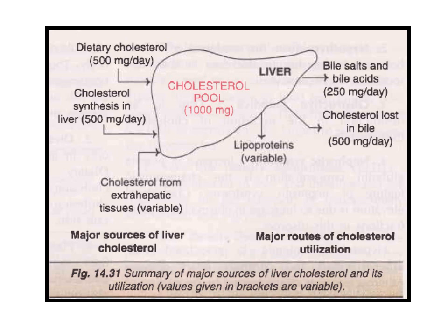These are the summary of the major sources of liver cholesterol and its utilization. Cholesterol is synthesized in the liver and also formed from extra-hepatic tissues, as already discussed. The major routes of utilization include cholesterol in the form of lipoproteins, bile salts, and bile acids. Cholesterol is also lost in the bile.